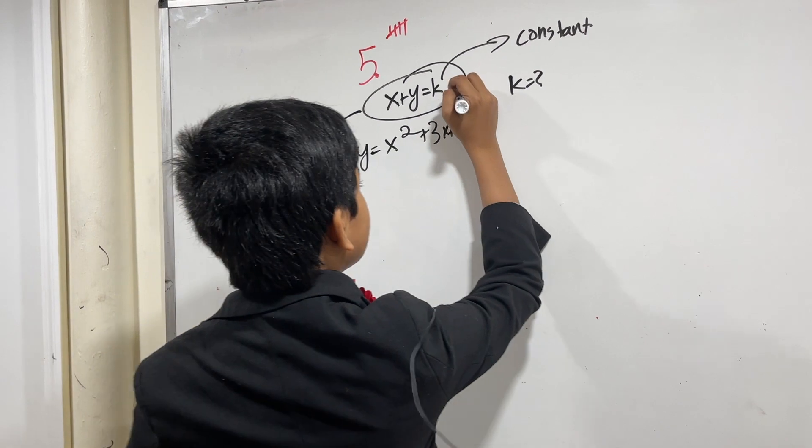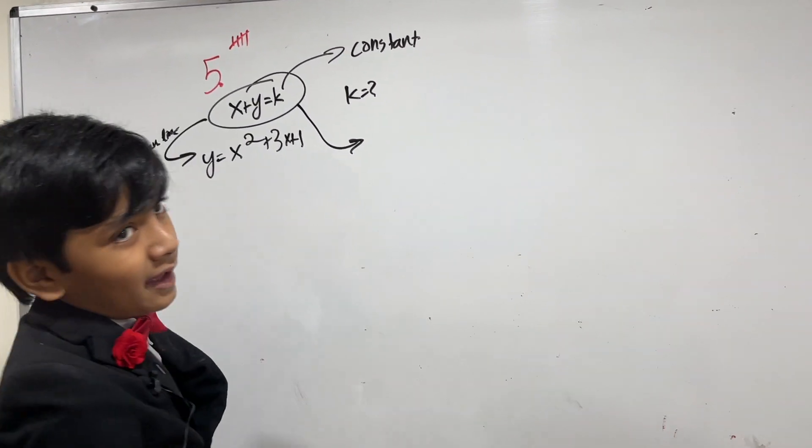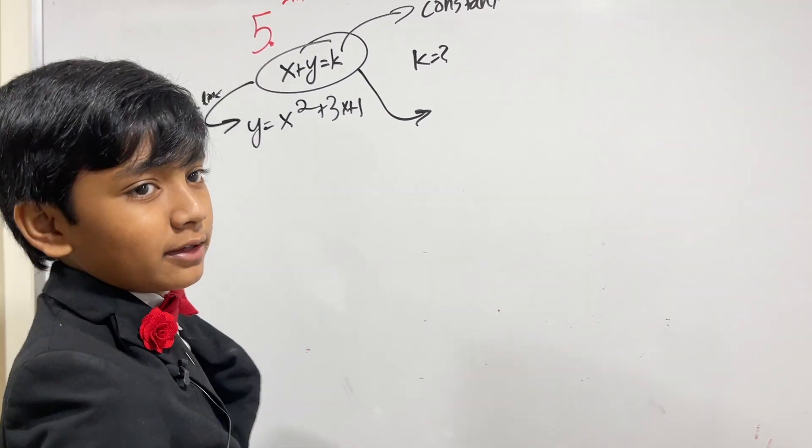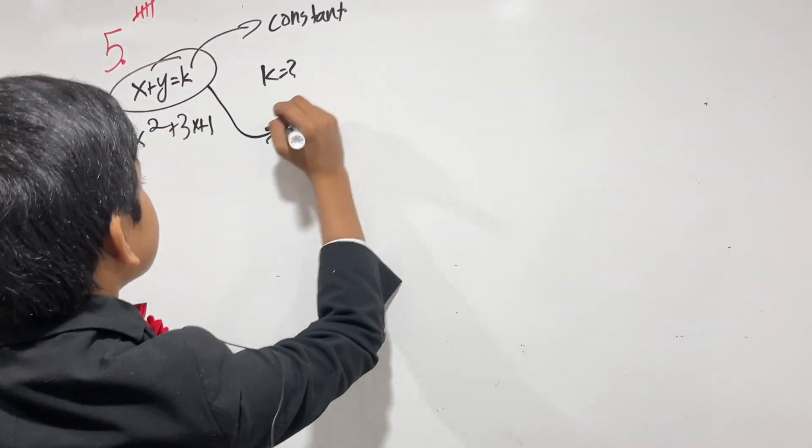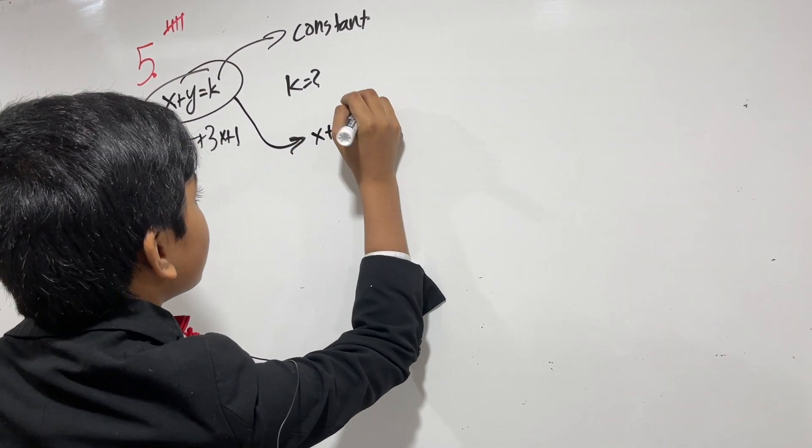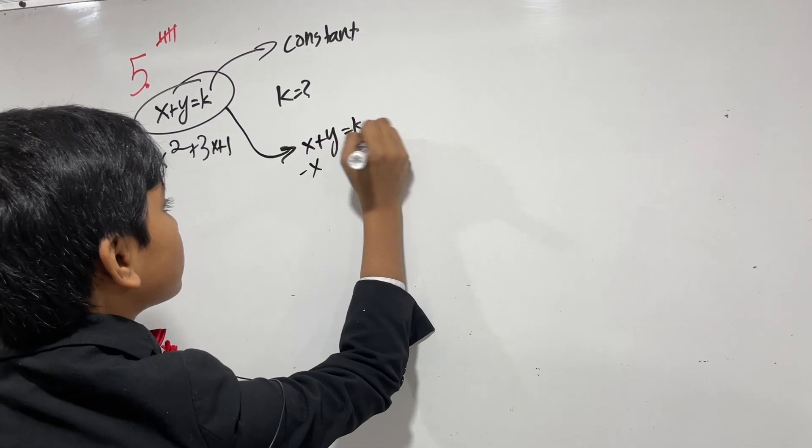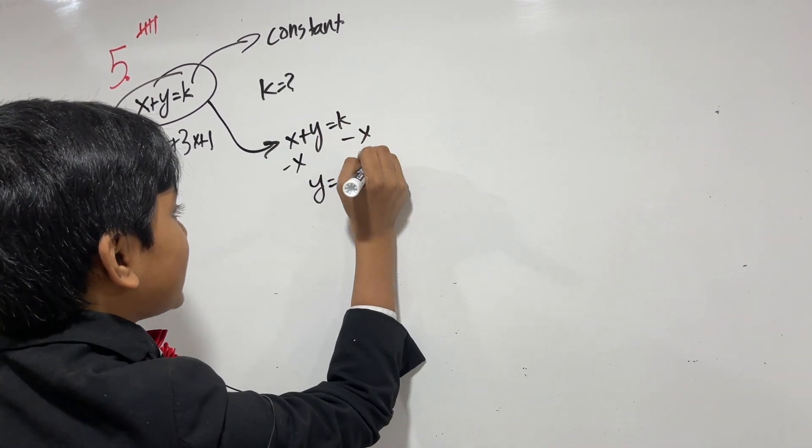Well, let's actually rearrange this into y equals mx plus b form. Man, I haven't said mx plus b since I took algebra 1. So, x plus y equals k. Now we subtract x from both sides. We get y is minus x plus k.